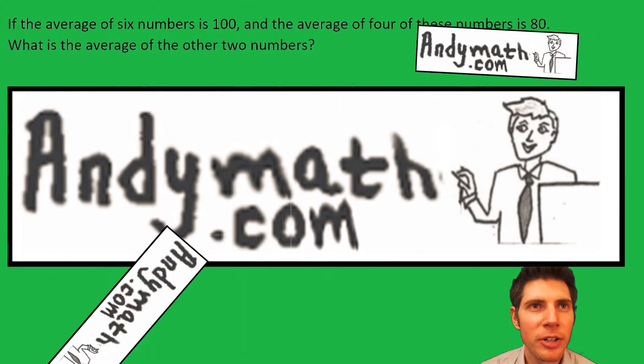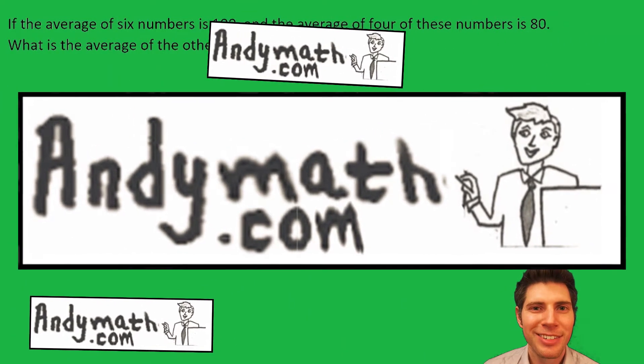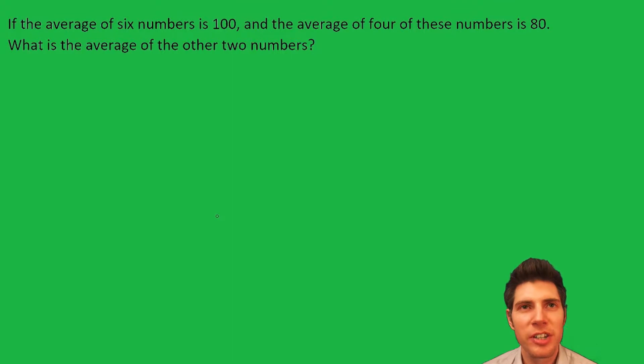Hey guys, welcome to this video. If the average of six numbers is 100, and the average of four of these numbers is 80, what is the average of the other two numbers?